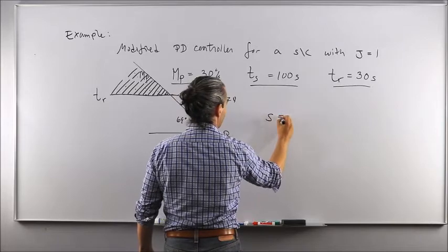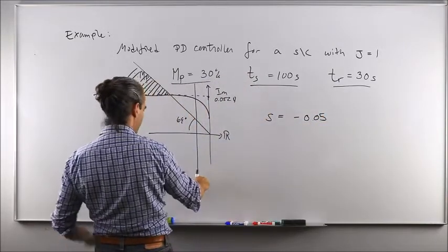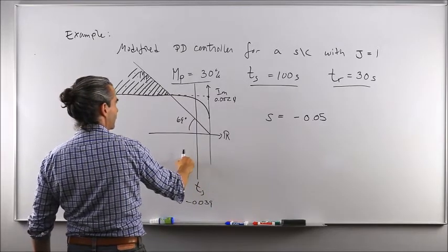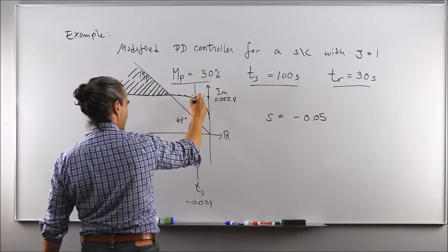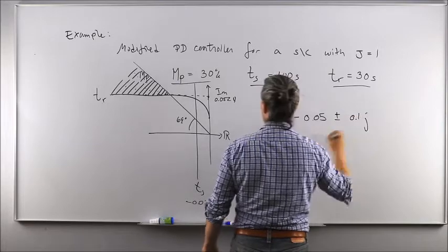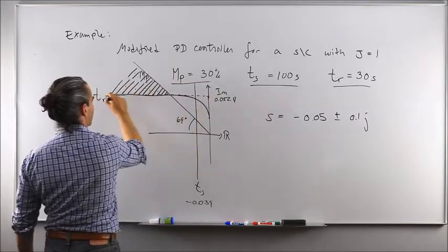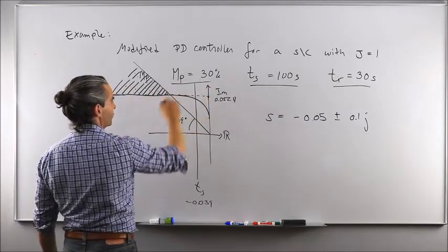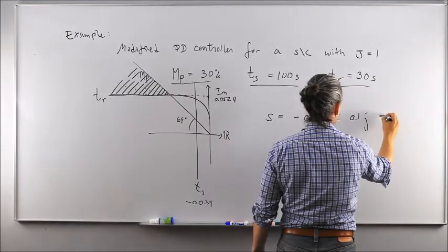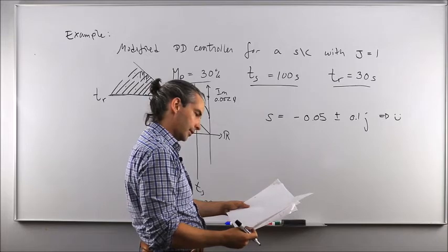I selected desired pole locations at −0.05 ± 0.1j. The real part −0.05 is slightly further left than the −0.039 boundary to provide margin, and the imaginary part 0.1 is above the lower limit of 0.0524. This is my choice — other valid pole locations within the allowable region would also work.